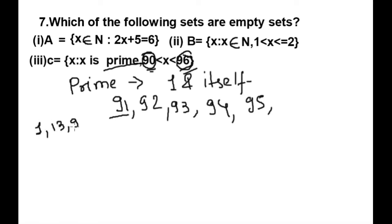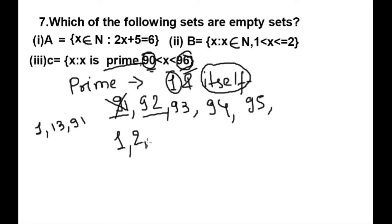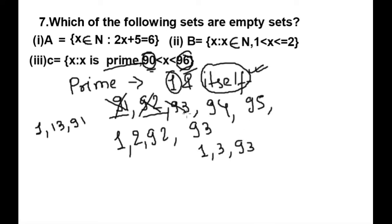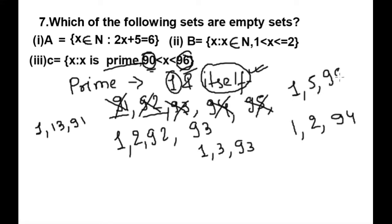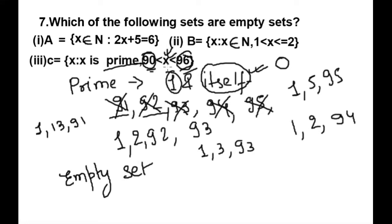91 is divisible by 1, 7, 13, and 91 — more than 1 and itself, so not prime. 92 is divisible by 1, 2, and 92 — not prime. 93 is divisible by 1, 3, and 93 — not prime. 94 is divisible by 1, 2, and 94 — not prime. 95 is divisible by 1, 5, and 95 — also not prime. There is no prime number in this range, so C is also an empty set.